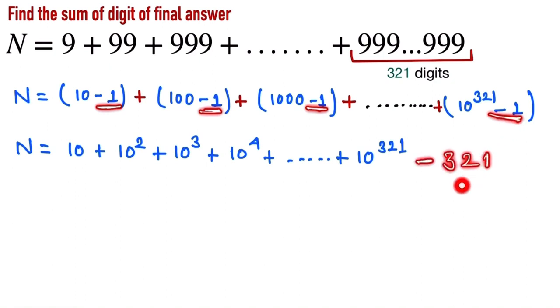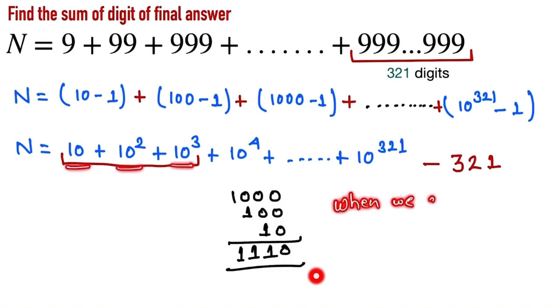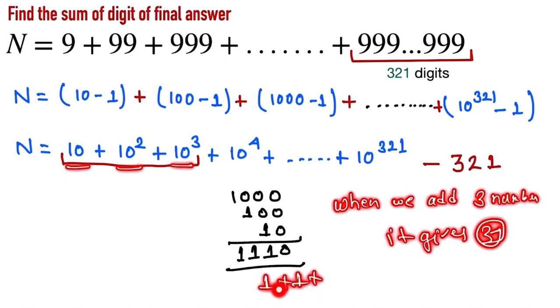So now we take the first 3 digits and now we add it. So it gives 1110 when we add the last 3 digits: 10, 100, and 1000. It gives 3. 1 here, 1, 1, 1.